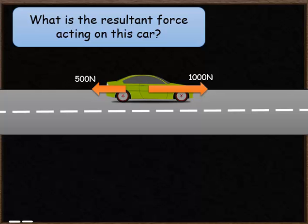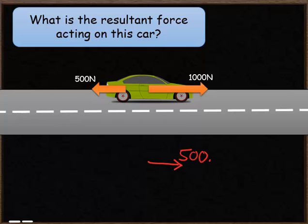The first question asks: what is the resultant force acting on this car? The forward force on this car is 1000 newtons. There's also a backwards force acting on the car of 500 newtons. The resultant force means the overall force — if we take all the forces into account, what's the overall impact on the car? The overall impact will be a forward force, because the forward force is larger than the backward force of 500 newtons.